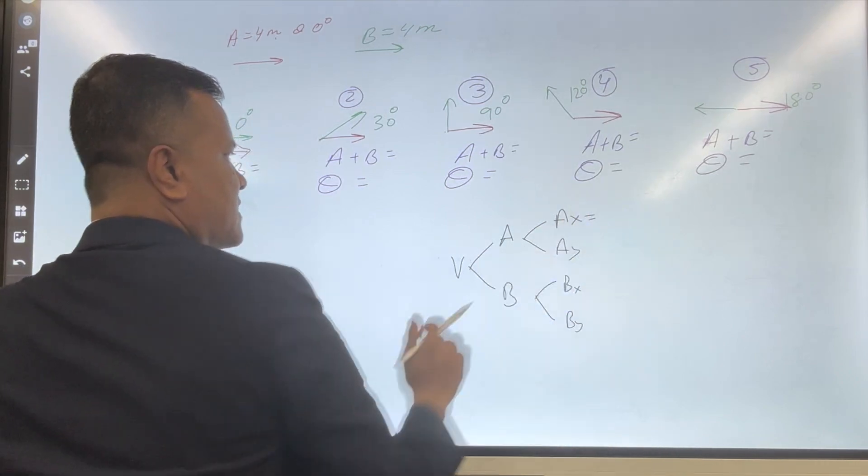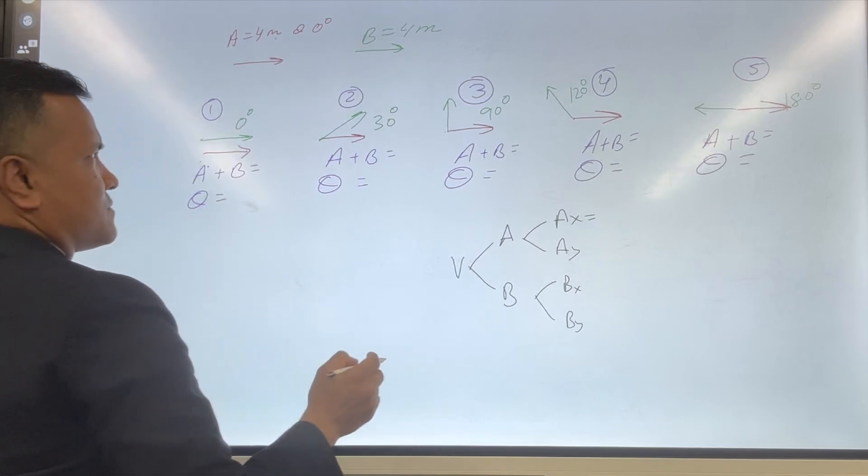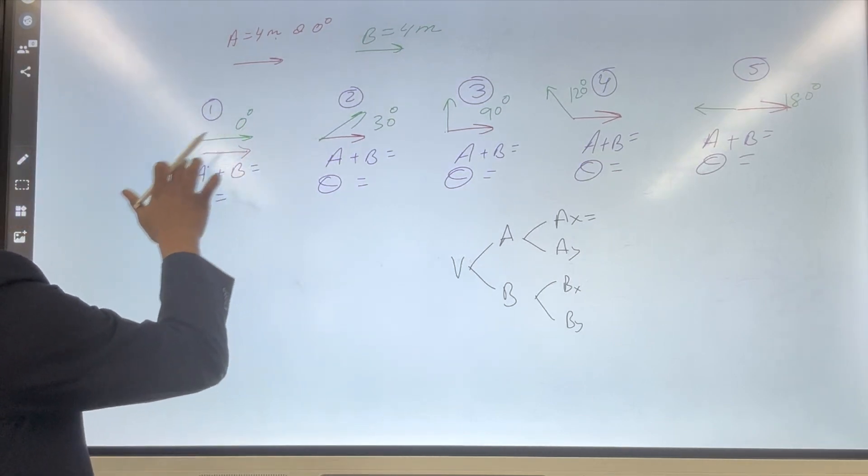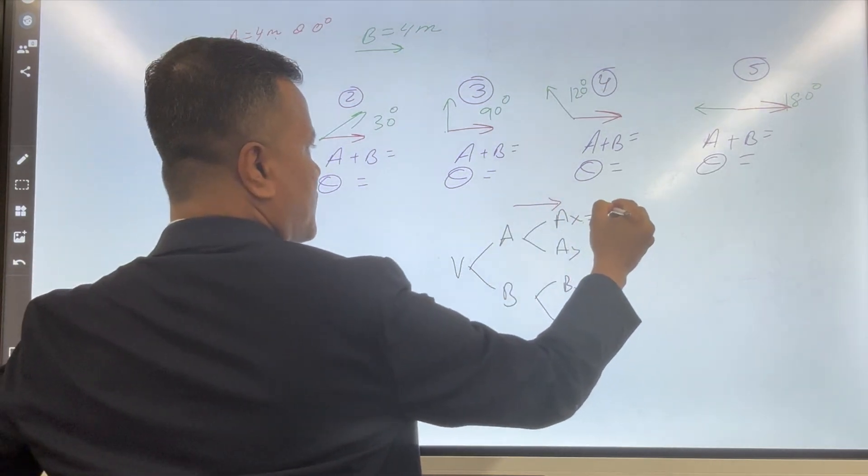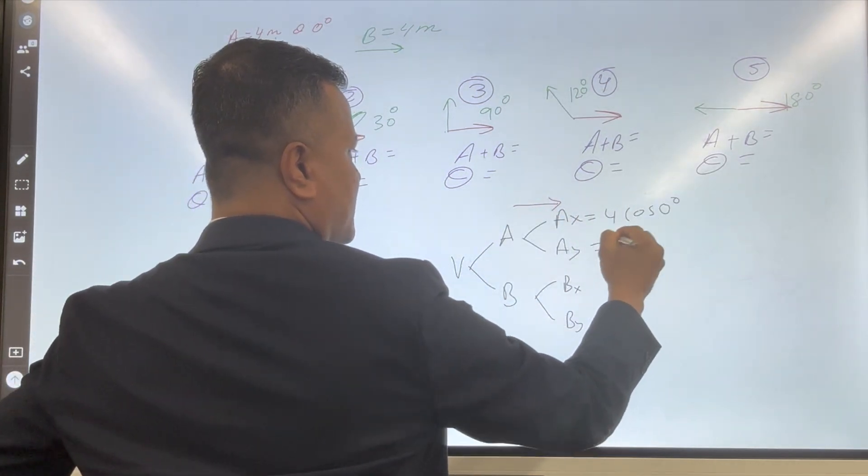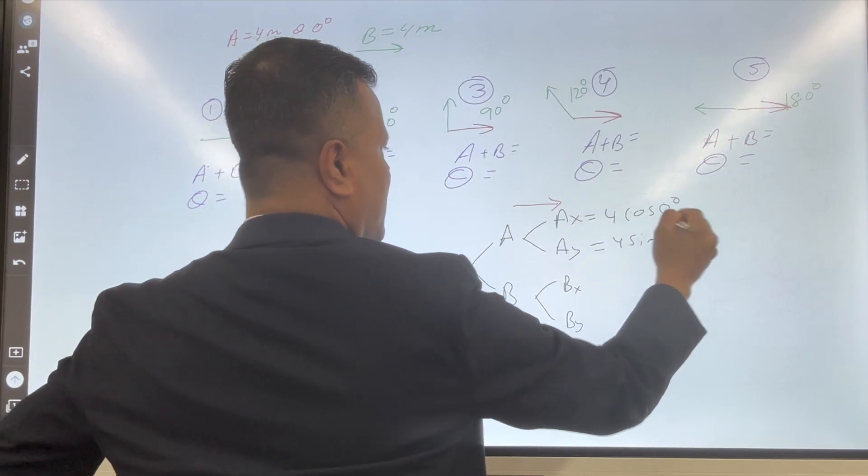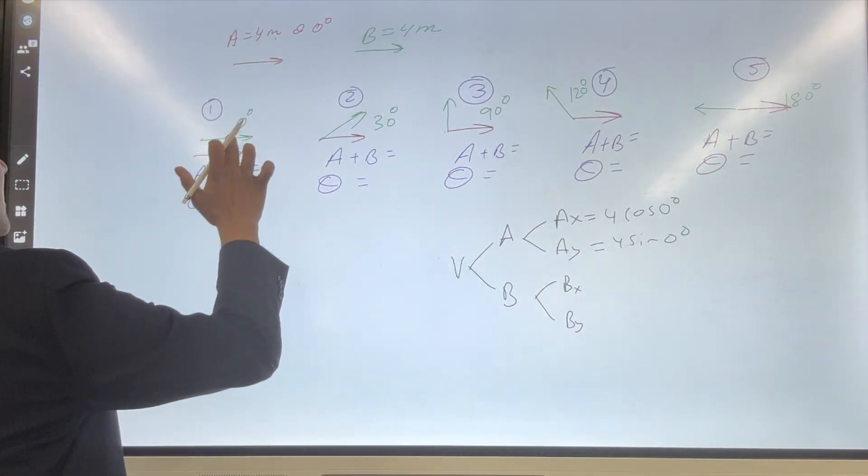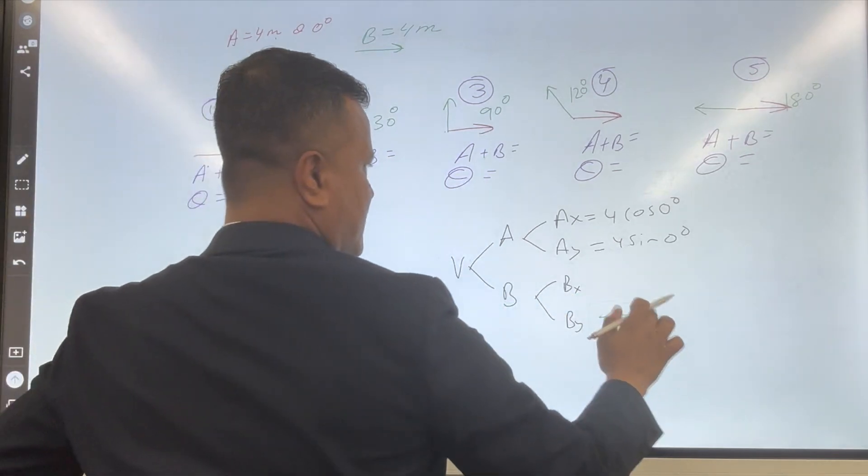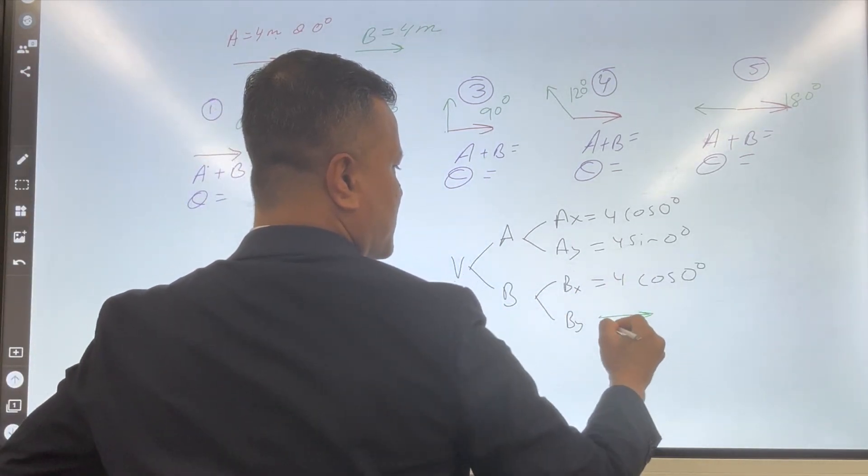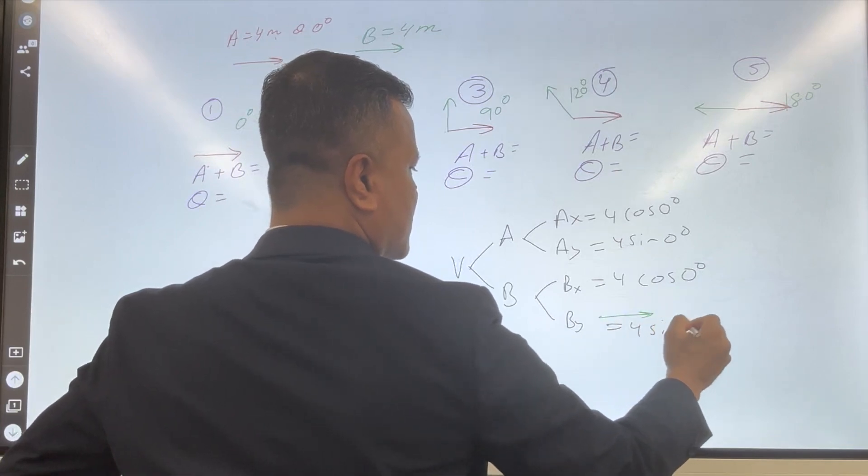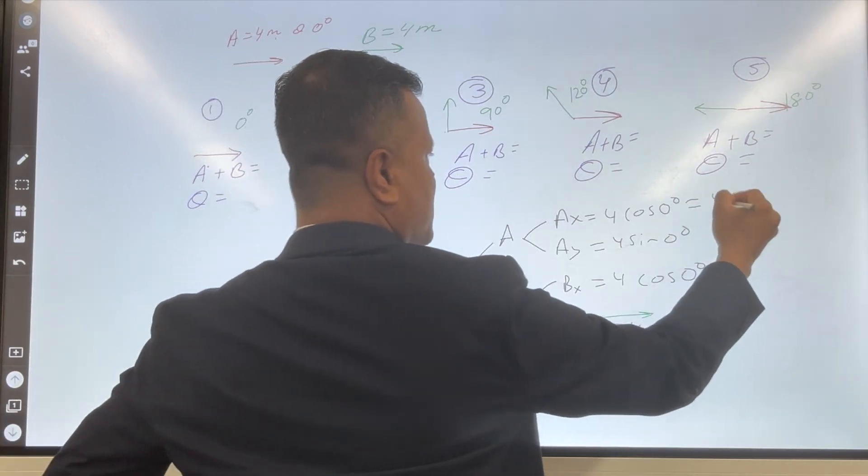Ax is, you have this one. We are going to, first, this one: 4 cosine 0 degree and 4 sine 0 degree, and then we're going to do the other one.